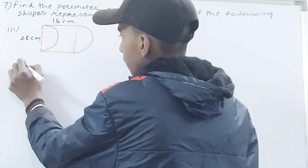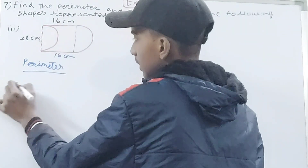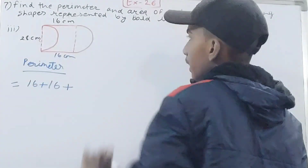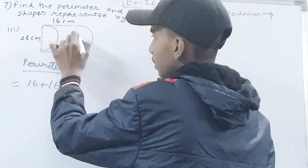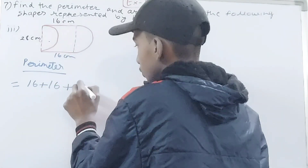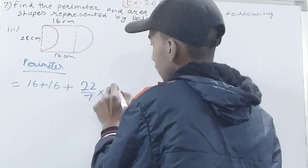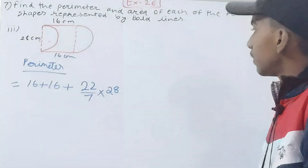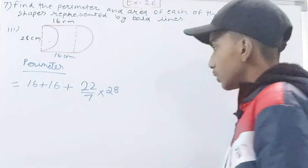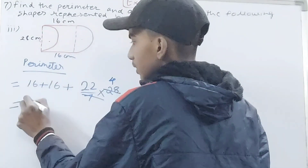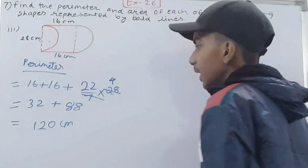Now for the third part. We calculate the perimeter of this figure. This side is 16 cm, so 16 + 16 + 16. The width is 28 cm, and the semicircle on top has been replaced with one on the side, same size. The circumference of the full semicircle is πd = (22/7) × 28. Cancelling: 22 × 4 = 88. So perimeter = 16 + 16 + 16 + 88 = wait — 32 + 88 = 120 centimeters.